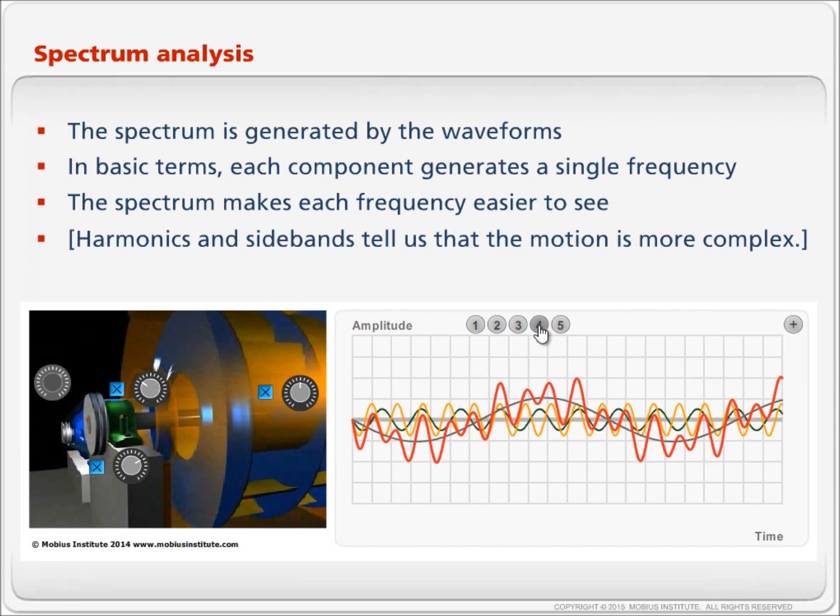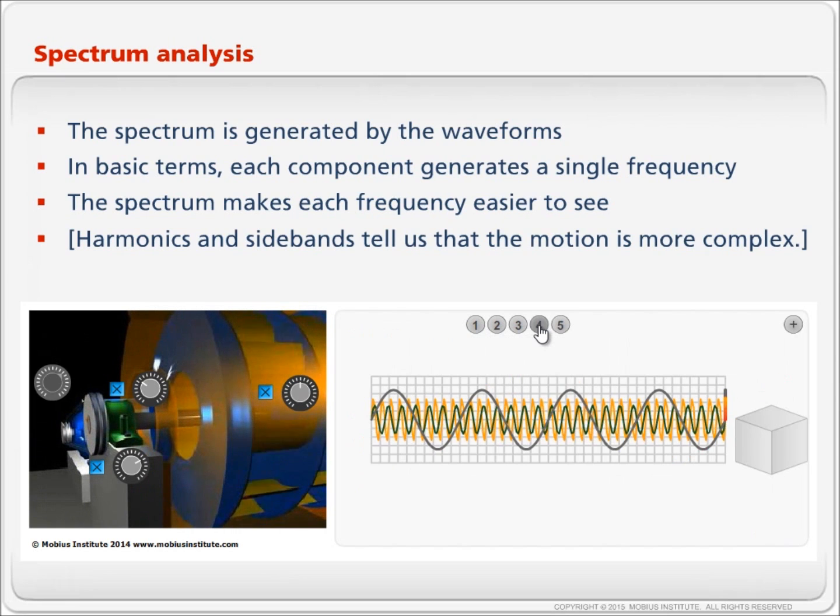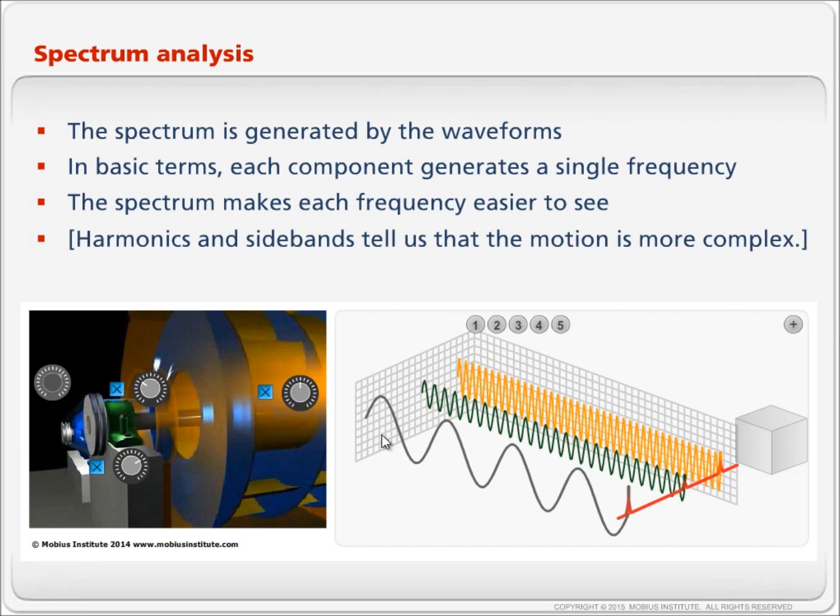Let's look at this in 3D. What we're seeing here is basically what we saw before. There is the grey vibration, the green vibration and the orange vibration. Now I'm going to rotate our view. This is the passage of time, this is amplitude. But we've got a three dimensional picture because now we have separated the three waveforms in terms of frequency. The shaft turning is a lower frequency, higher frequency is the green vibration from the bearing, and the orange vibration from the fan is higher frequency still.